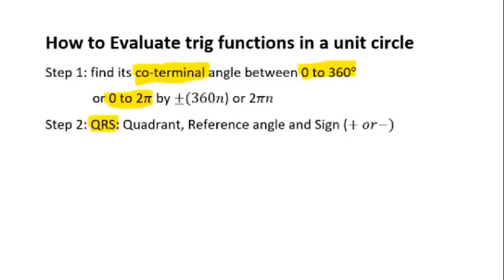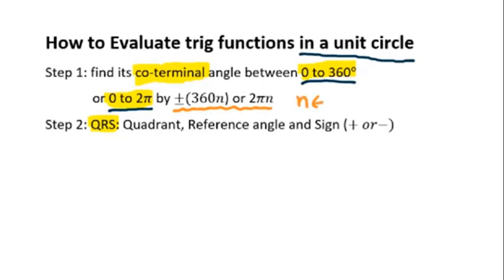Here are the steps to evaluate trig functions on a unit circle. Step 1: Find the co-terminal angle between 0 and 360 degrees, or 0 to 2π, by adding or subtracting 360 times n (or 2π times n), where n is an integer. The reason we do that is it's easier to figure out the quadrant. Step 2: Use QRS — Quadrant, Reference angle, and Sign.